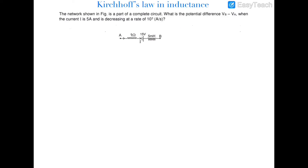In the next question, this is a branch which is a part of a circuit and we have to find out VA minus VB. The current is decreasing at a rate of 10³ amperes per second and the instantaneous current is 5 ampere. Since the current is decreasing, the polarity of EMF would be negative at one terminal and positive at the other, in support of that current. So: VA minus I times 1 plus 15 plus E equals VB.